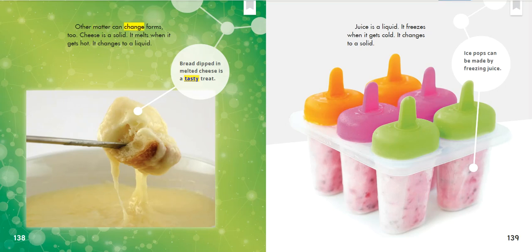Other matter can change forms, too. Cheese is a solid — it melts when it gets hot and changes to a liquid. Bread dipped in melted cheese is a tasty treat. Juice is a liquid — it freezes when it gets cold and changes to a solid. Ice pops can be made by freezing juice.